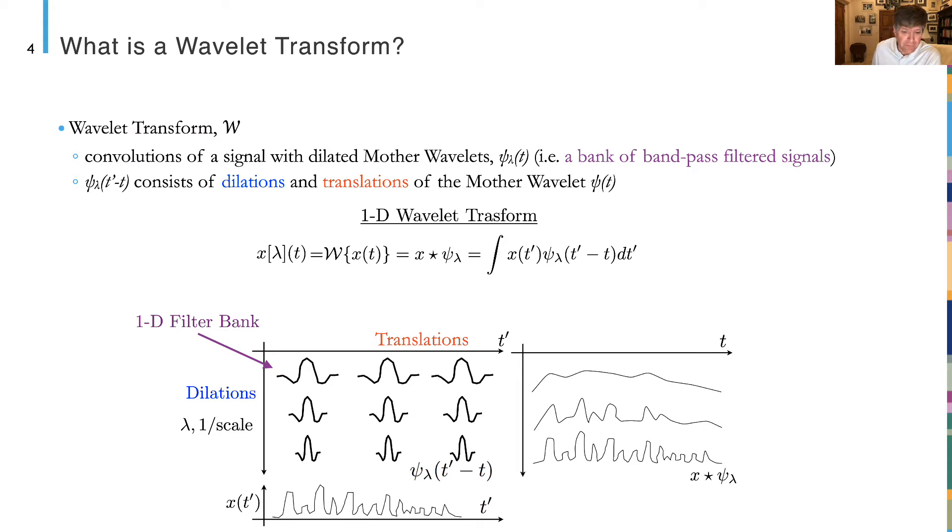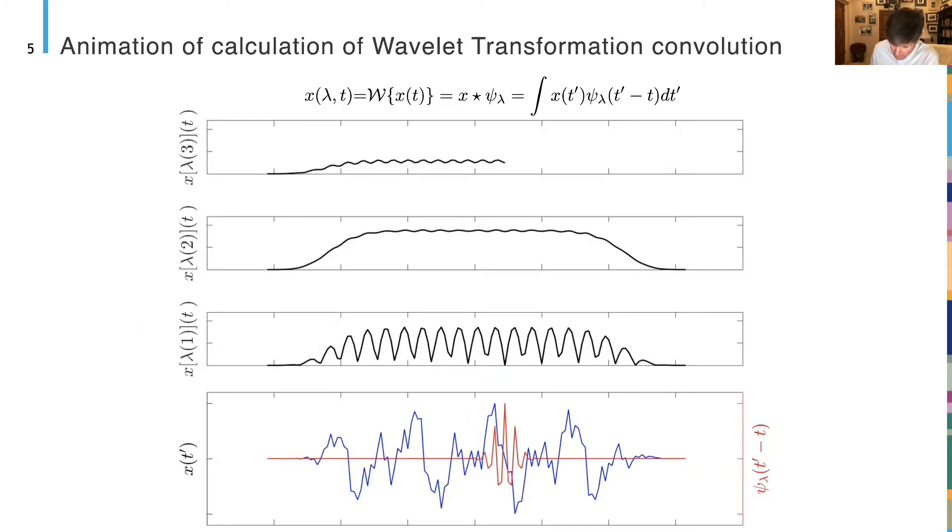What is a wavelet transformation? You take a signal x(t) and convolve it with wavelets that have been dilated different amounts so that you get signals filtered at increasingly larger scales. Here is an animation of that starting with the largest wave number to a medium wave number and finally the smallest wave number of the transformation.